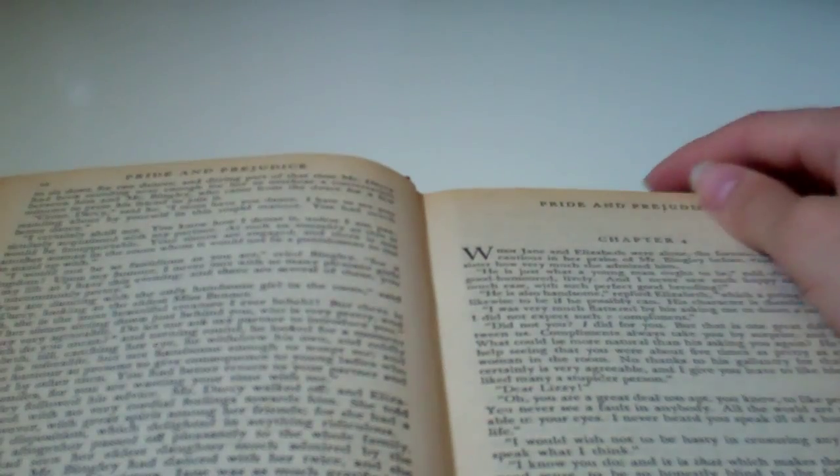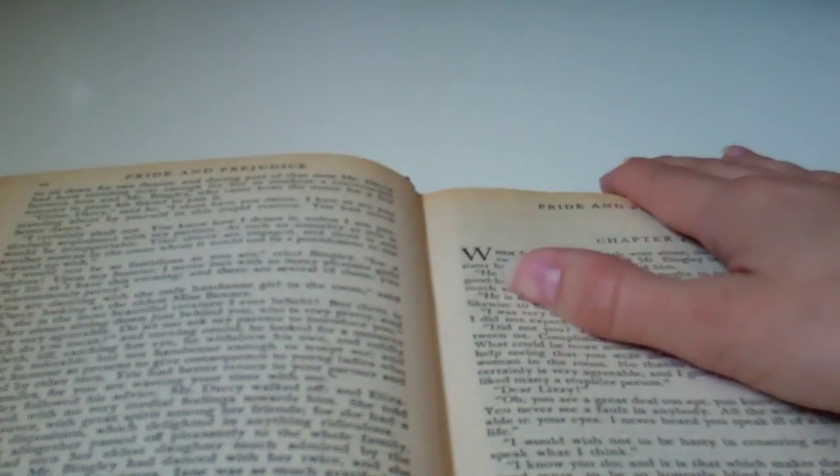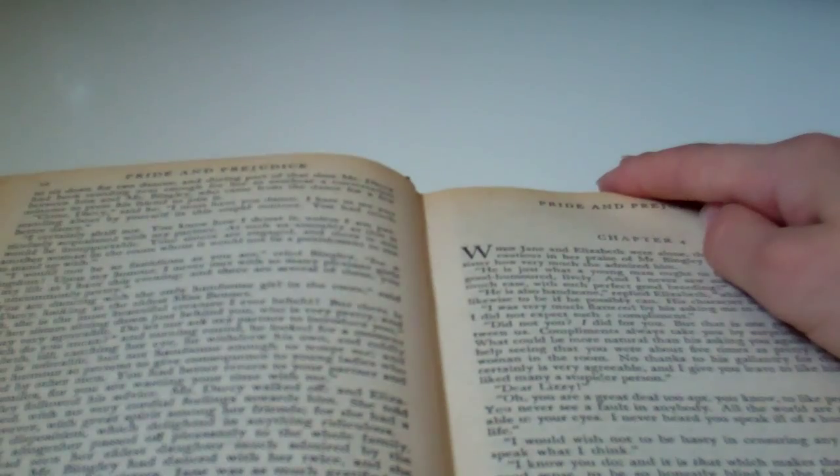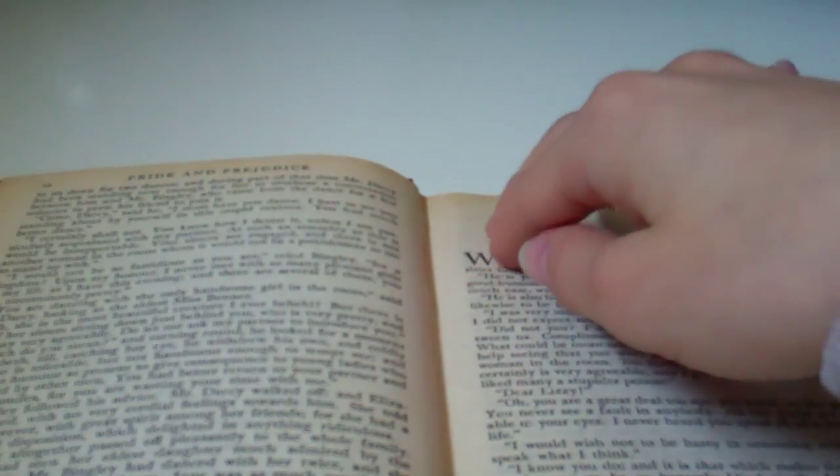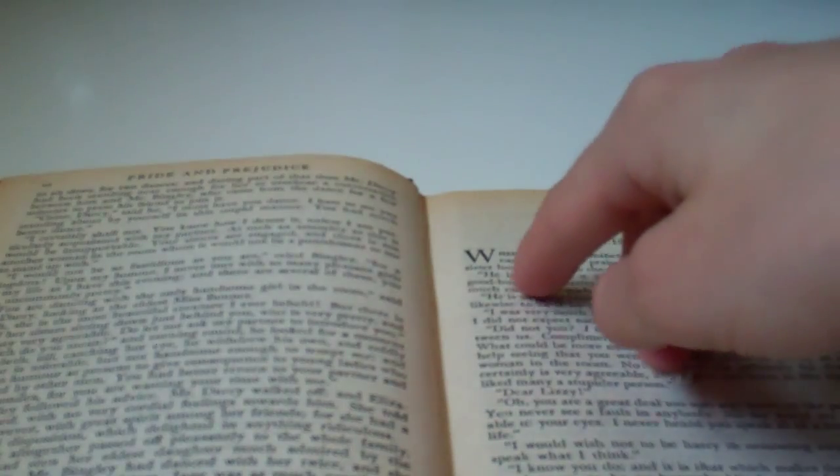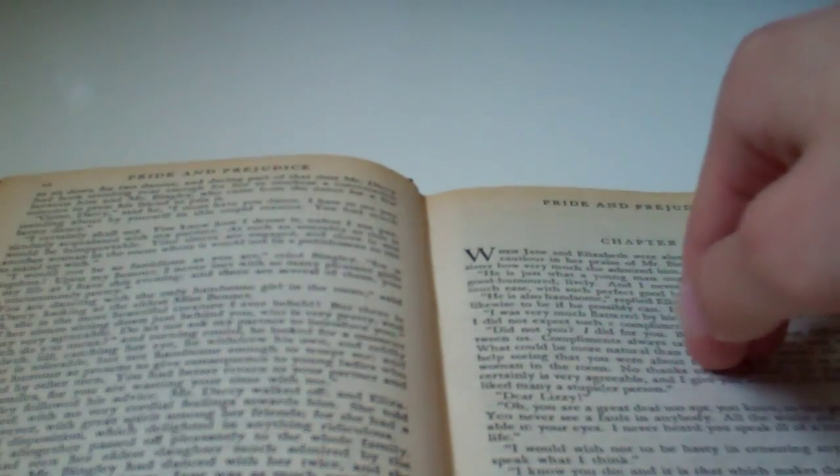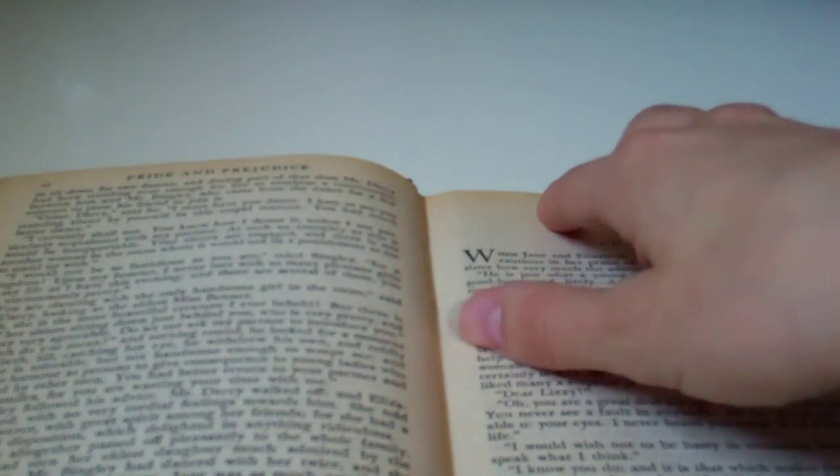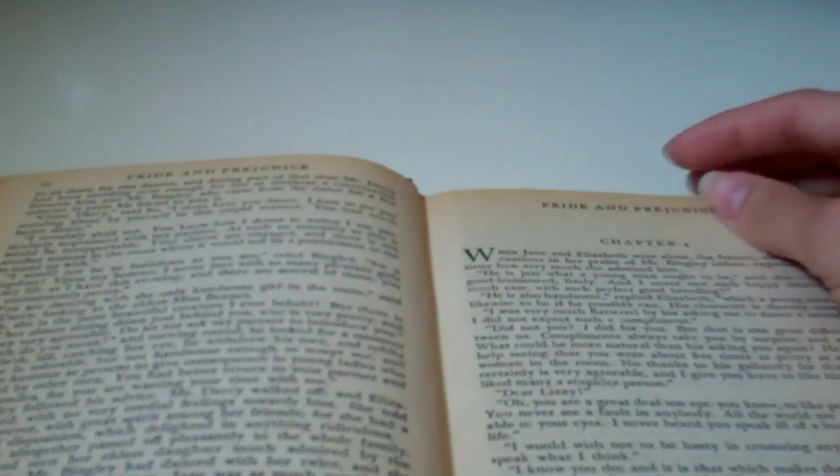Mrs. Bennet had seen her eldest daughter much admired by the Netherfield party. Mr. Bingley had danced with her twice, and she had been distinguished by his sisters. Jane was as much gratified by this as her mother could be, though in a quieter way. Elizabeth felt Jane's pleasure. Mary had heard herself mentioned to Miss Bingley as the most accomplished girl in the neighborhood, and Catherine and Lydia had been fortunate enough to never be without partners, which was all that they had yet learned to care for at a ball. They returned therefore in good spirits to Longbourn, the village where they lived and of which they were the principal inhabitants. And thus concludes chapter three.